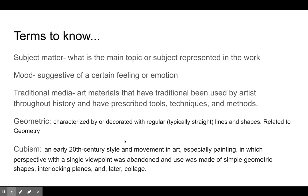Cubism is an early 20th century style and movement in art, used mostly in painting, where there's more than one perspective — you're seeing things from more than one viewpoint — and you're also seeing mainly geometric shapes. You're not seeing a lot of curvy shapes.